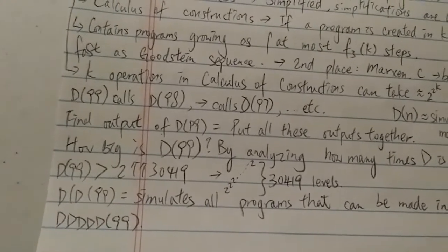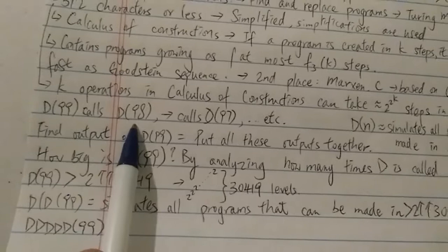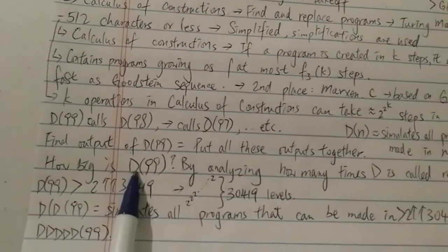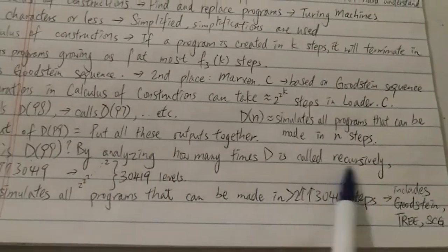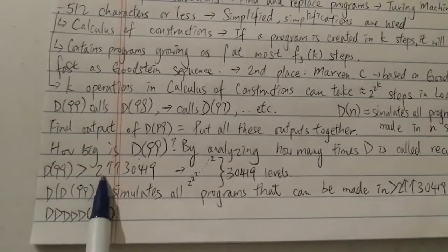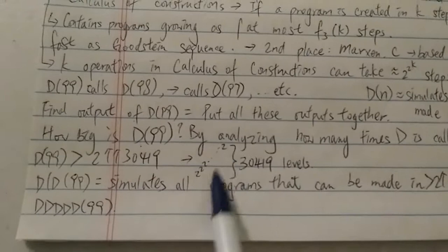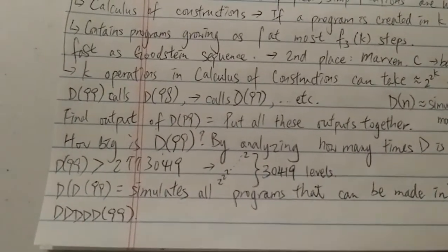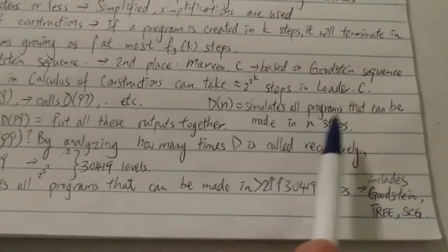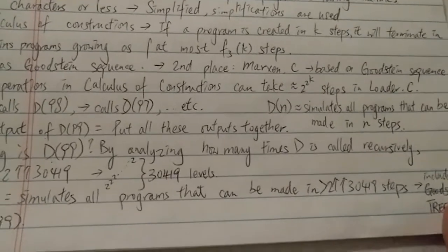What is the final output of d(99)? The final output is that you put together all of the outputs — d(98), d(97), d(96), and so on. So how big is d(99)? By analyzing how many times d is called recursively, we can prove that d(99) is at least bigger than 2↑↑30419, which means 2 to the 2 to the 2 to the 2... for 30,419 levels. This is a very very big number. Since n = 99, it simulates all programs that can be made in 99 steps, so this is just a weak lower bound.